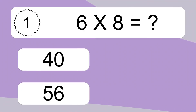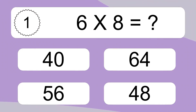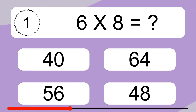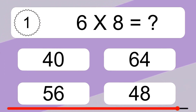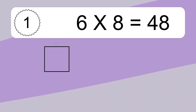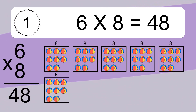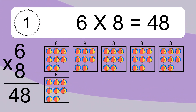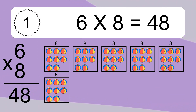6 times 8 equals what? 6 times 8 equals 48. We have 6 boxes and each box has 8 colorful balls inside. If you count all the balls in all the boxes together, you will have 6 times 8 balls. This equals 48 balls.